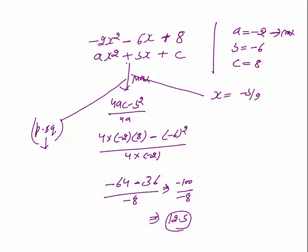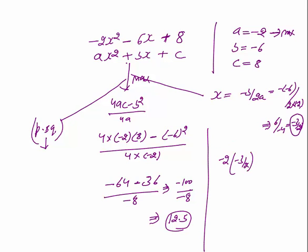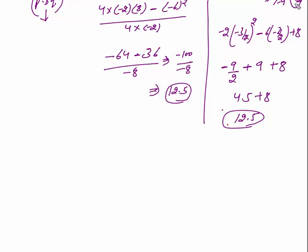Same result can be got by putting x = −b/(2a): −(−6)/(2 × −2) = 6/(−4) = −3/2. If you put x = −3/2 into −2x² − 6x + 8: −2×(−3/2)² − 6×(−3/2) + 8 = −2×(9/4) + 9 + 8 = −9/2 + 9 + 8. This gives 4.5 + 8 = 12.5. So you can get the value in 3 ways; the maximum value is confirmed as 12.5.